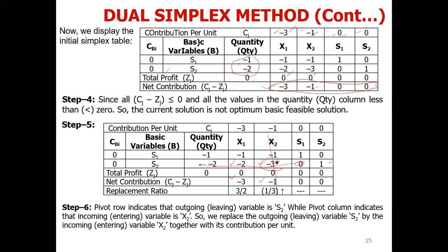So we have to perform the row operations. We compute new R2 as old R2 divided by minus 3. So: minus 2 divided by minus 3, minus 3 divided by minus 3, and so on.